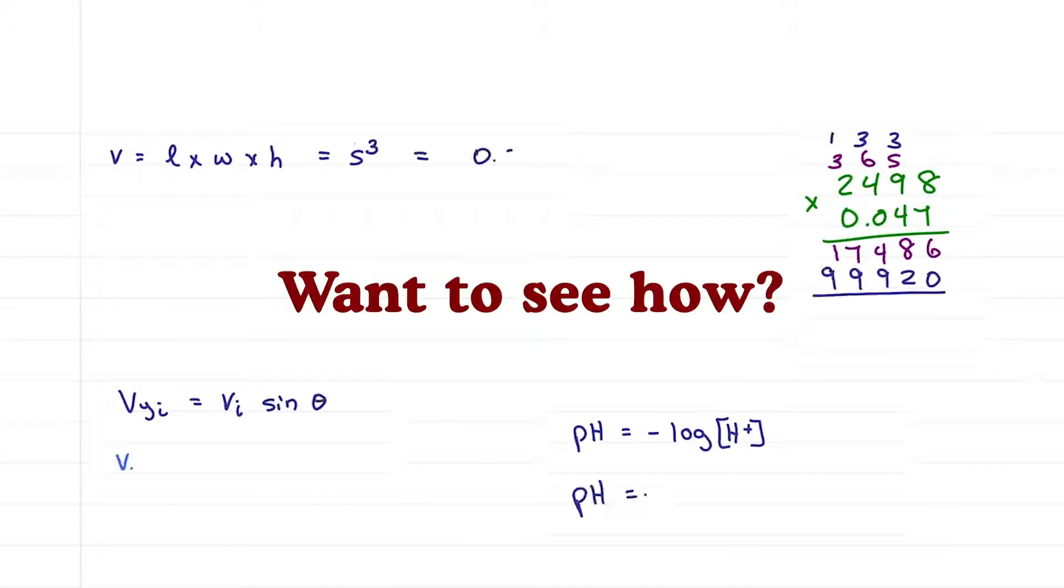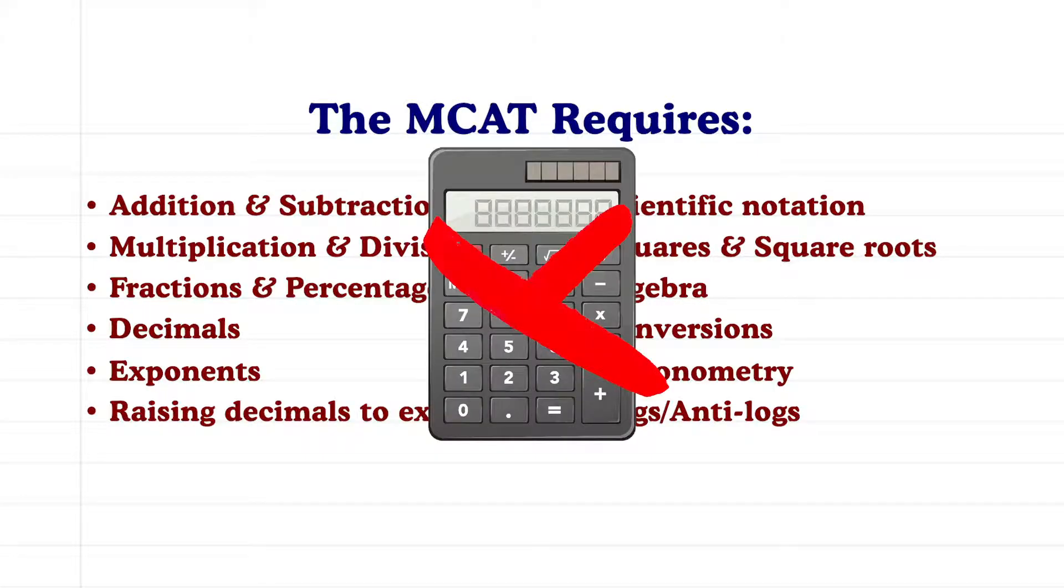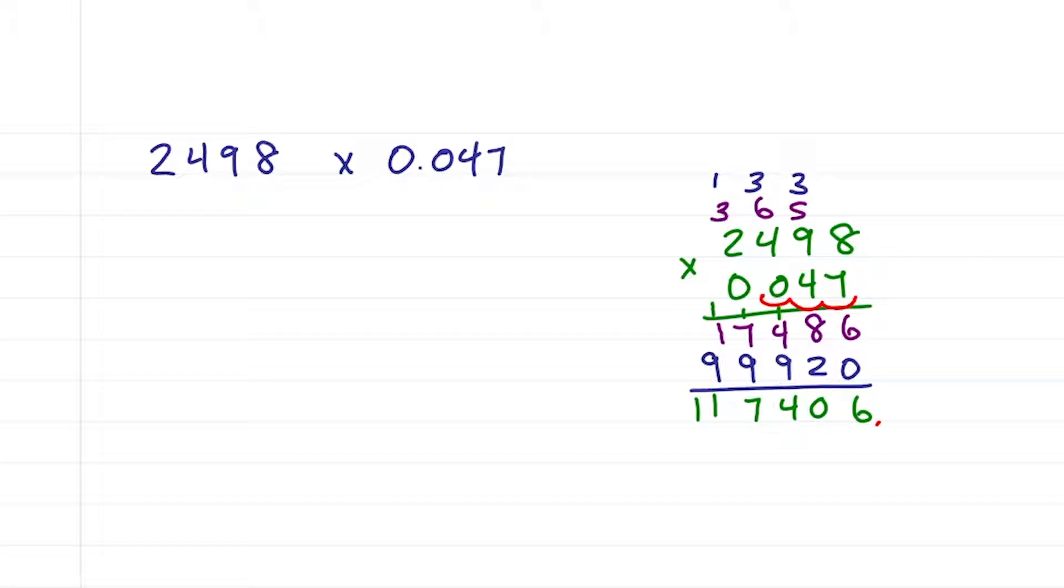Can you quickly solve the following without a calculator? Yes, you're responsible for all this on the MCAT without a calculator. Let's start simple, multiplying 2498 times 0.047. There's the long way, that took way too long.